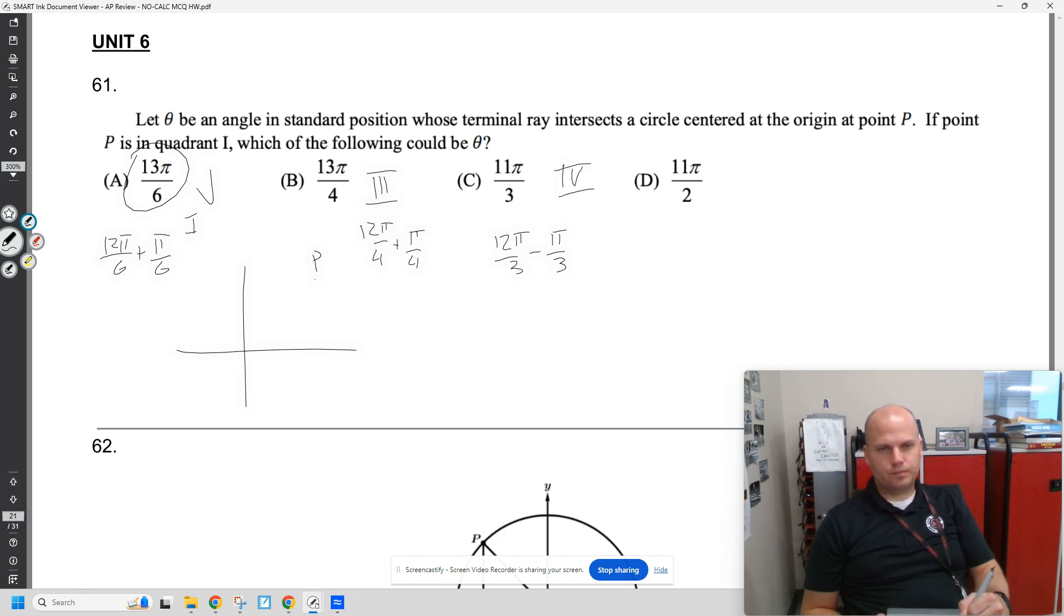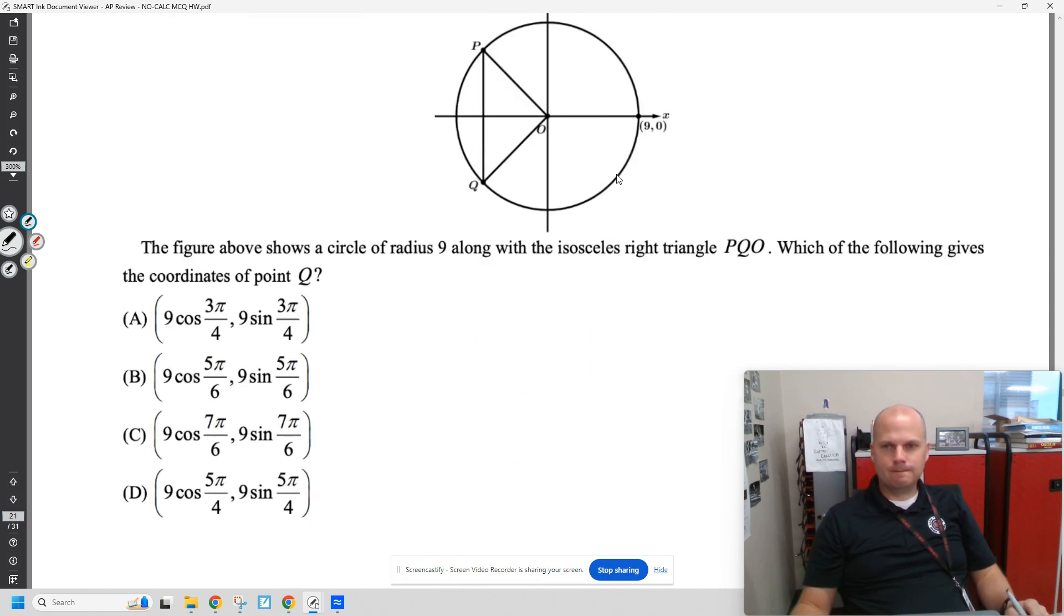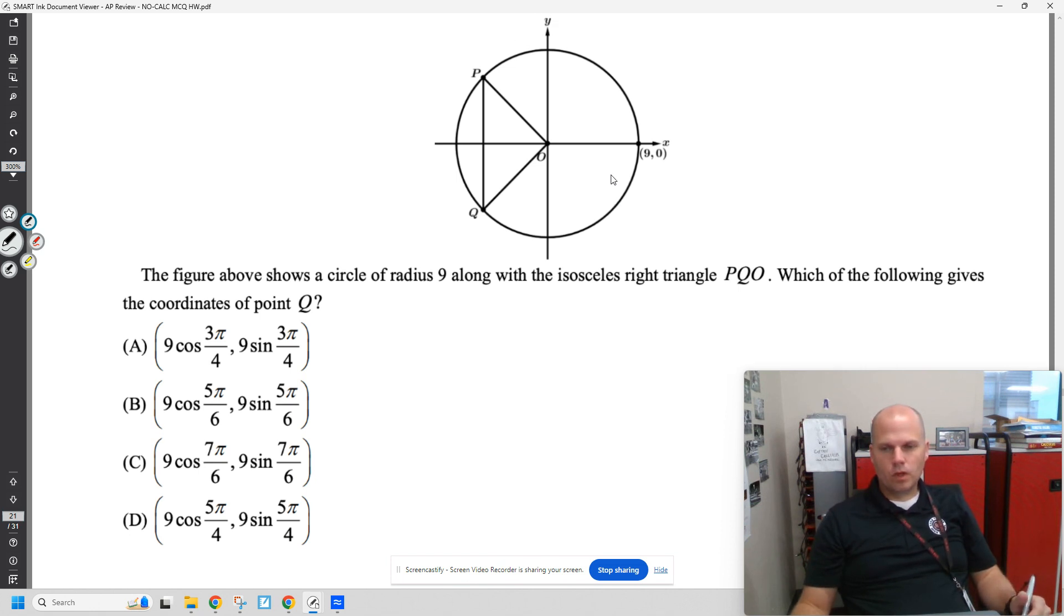11π over 2 is going to be on the y-axis. If you want to, you could do 1, 3, 5, 7, 9, 11. You do 1, 2, 3, 4, 5, 6, 7, 8, 9, 10, 11 π over 2's, but that's like the bottom y-axis.